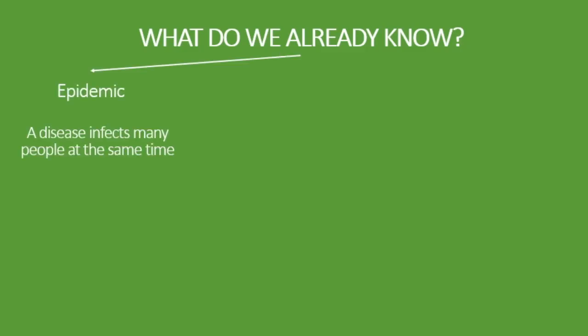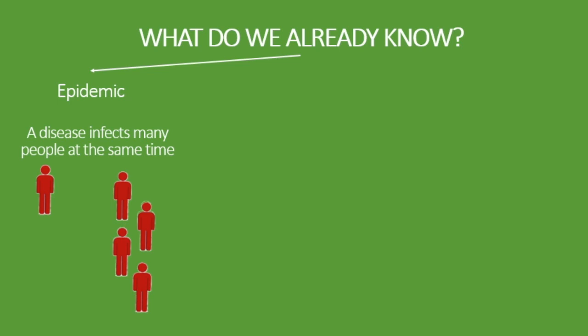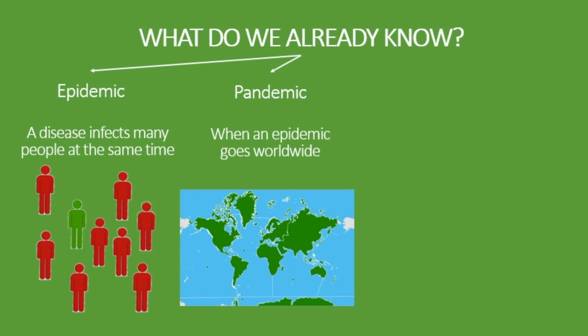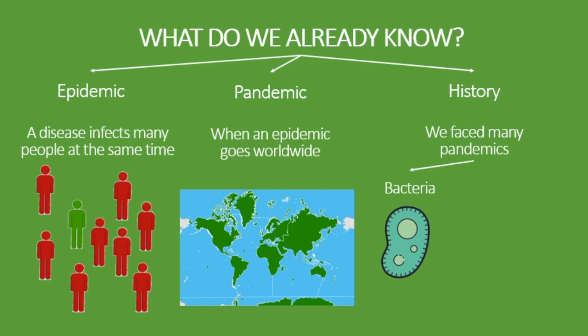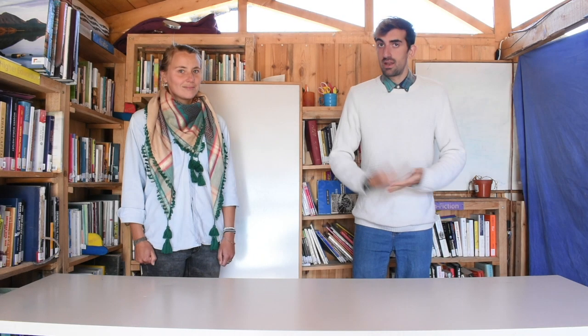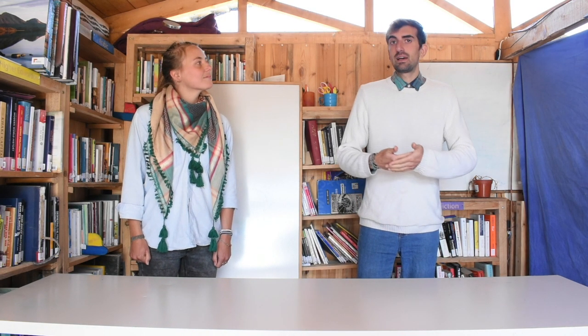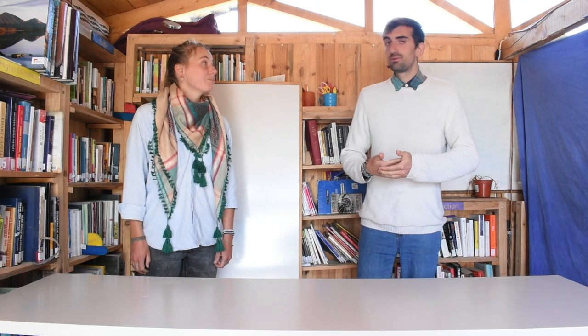What do we already know? An epidemic is a disease that infects many people at the same time. A pandemic is an epidemic that happens in different countries around the world. In history we have faced many pandemics, some caused by bacteria like the Black Death and others caused by viruses like HIV or smallpox. But actually right now we are living a pandemic due to coronavirus.